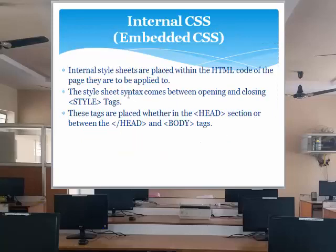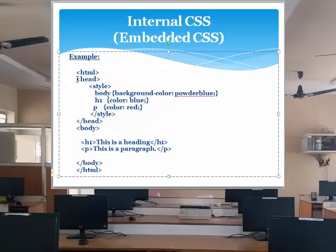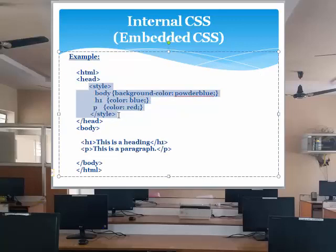The next type is internal CSS, which is also called embedded CSS. What is the exact meaning of internal? In your whole HTML document, in the head section, we use the style tag and define CSS rules inside it. That is why this particular CSS is embedded or internally linked to the HTML document — it is enclosed within the style tag or style element. These tags are placed in the head section or between the head and body section. This is called internal or embedded CSS.